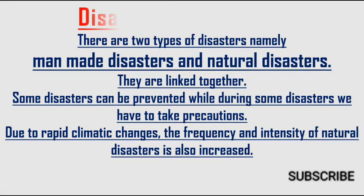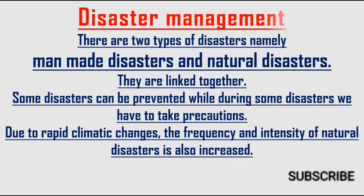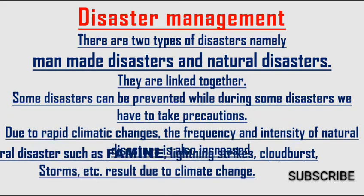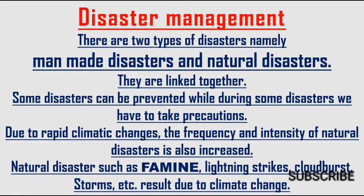Now let's see about disaster management. There are two types of disasters: manmade and natural, and no doubt they are linked together. Some disasters can be prevented, but during some disasters we must take precautions. Due to rapid climatic changes, the frequency and intensity of natural disasters has also increased. Natural disasters such as famine, lightning strikes, cloudbursts, storms, volcanoes, and tsunamis result from climatic changes.